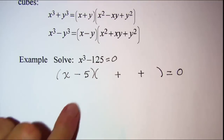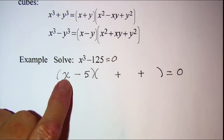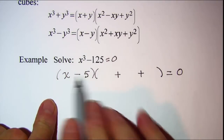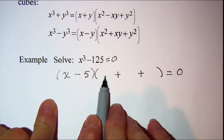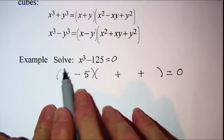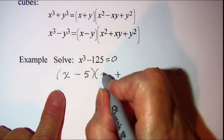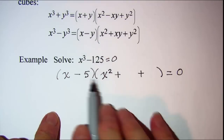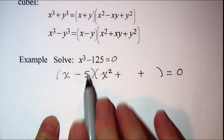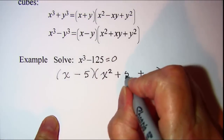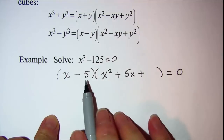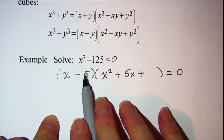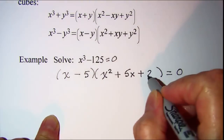Once you've established your binomial, you use those terms to get the terms in the trinomial. The first term in the trinomial is the first term of the binomial squared, giving x². The middle term is the product of the two terms — just 5x, ignoring the sign. And the last term is the square of the last term in the binomial, which is 25.